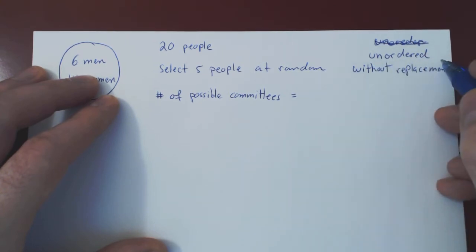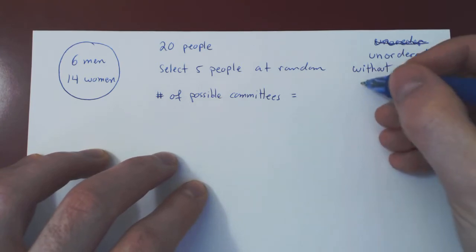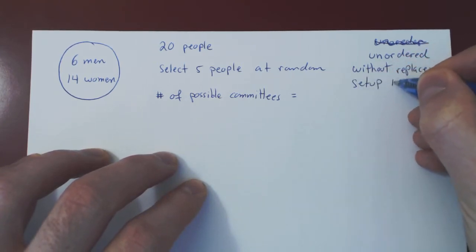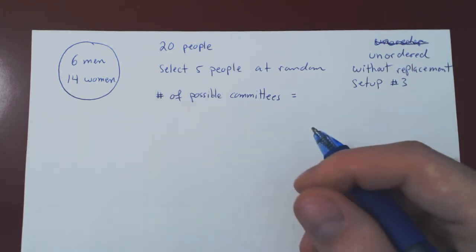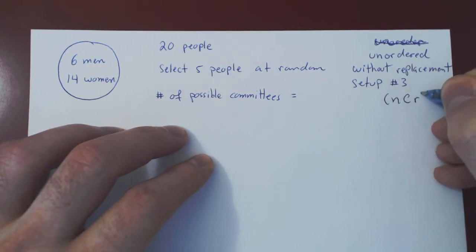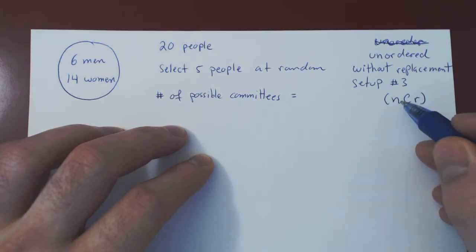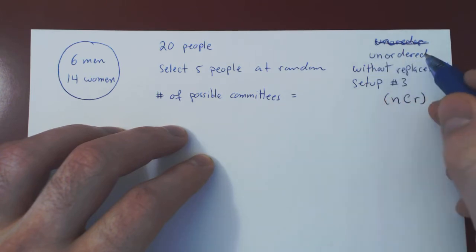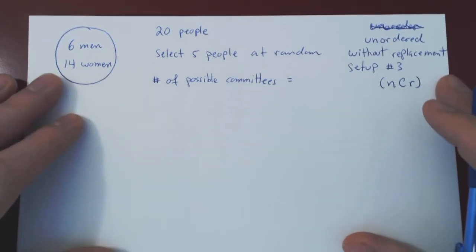So: unordered selection, without replacement — this is setup number 3. Which means we will count the total number of possibilities using nCr combinations. The total number of possible ways of choosing r elements from a set of n elements, when the selection is unordered and without replacement, is given by combinations.